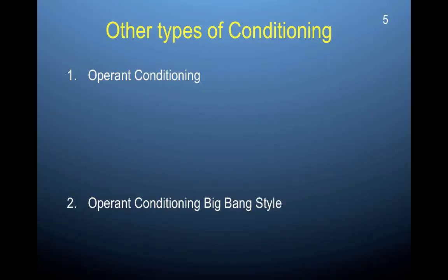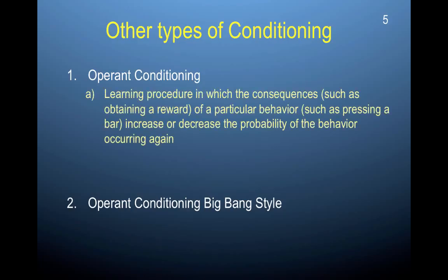Another type of conditioning that builds on classical conditioning is known as operant conditioning. Operant conditioning is a learning procedure in which the consequences of a particular behavior — such as obtaining a reward for pressing a bar — increase or decrease the probability of the behavior occurring again. These consequences can be a reward or a punishment, and that reward or punishment would increase or decrease the probability of the behavior occurring again.